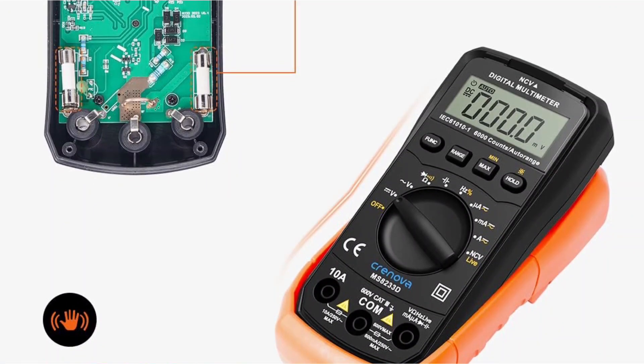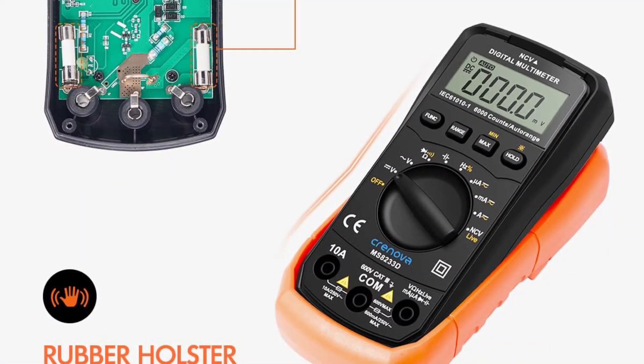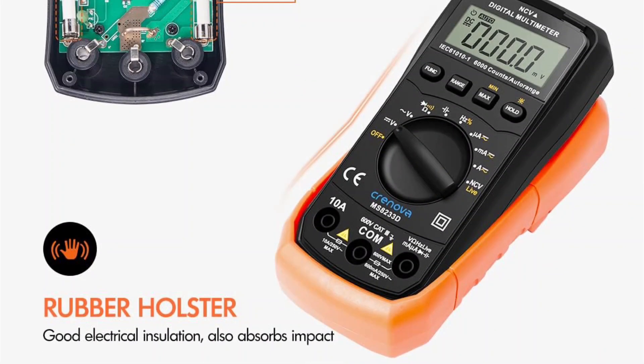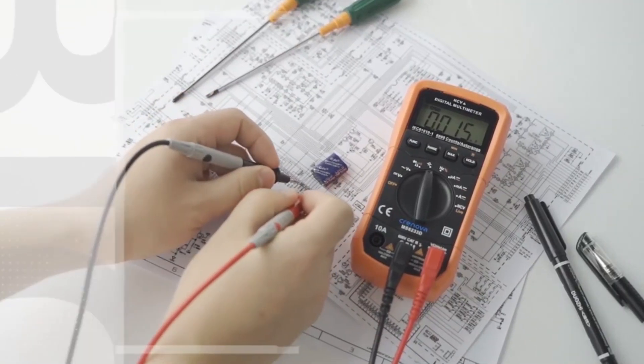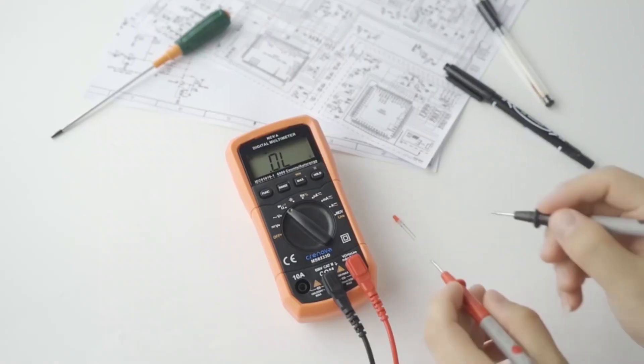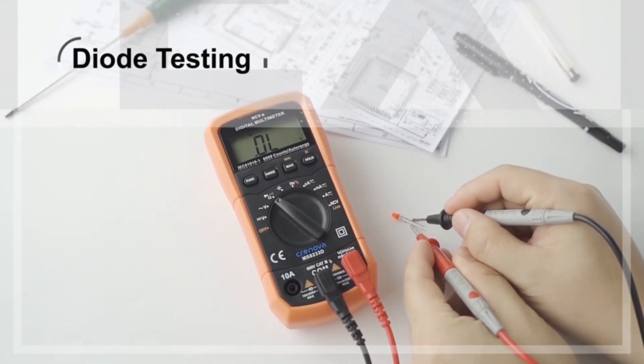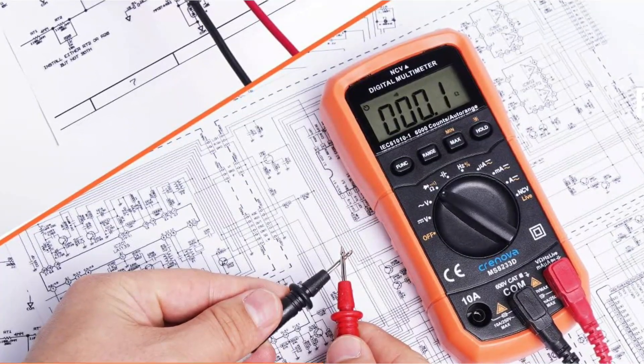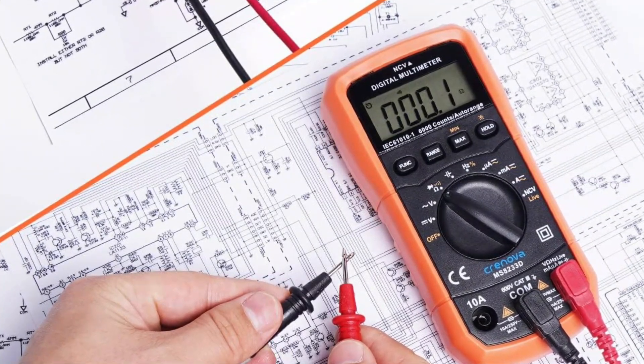This multimeter excels in measuring AC-DC voltage, current, resistance, continuity, diode, and more. The auto-ranging feature automatically selects the appropriate measurement range, reducing the risk of user error and increasing efficiency. It also includes a data hold function, which allows users to freeze readings for convenient recording.